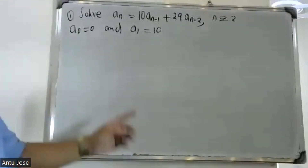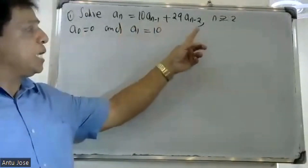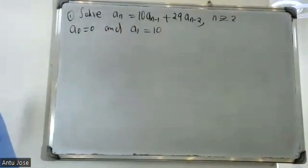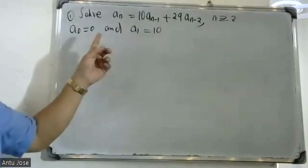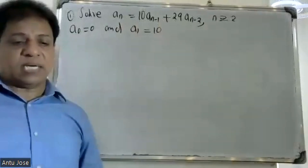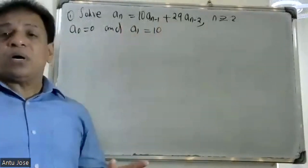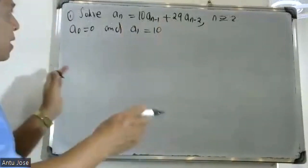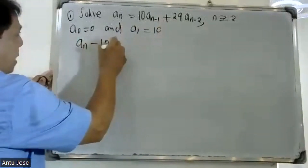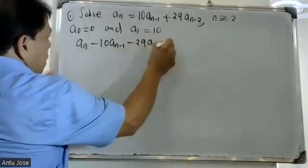Good morning students. We have the recurrence relation aₙ = 10aₙ₋₁ + 29aₙ₋₂, with a₀ = 0 and a₁ = 10. This is a second-order homogeneous linear recurrence. Rearranging: aₙ − 10aₙ₋₁ − 29aₙ₋₂ = 0.